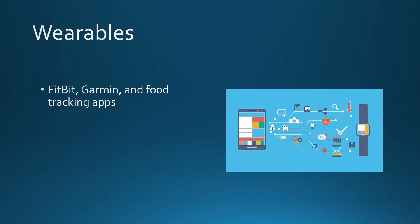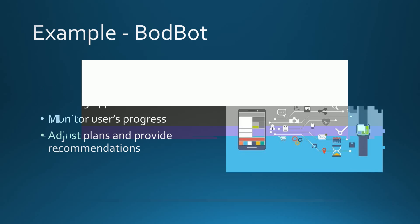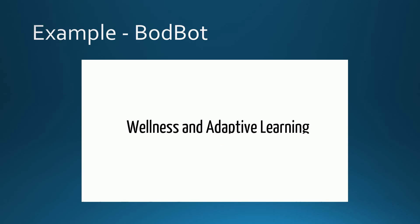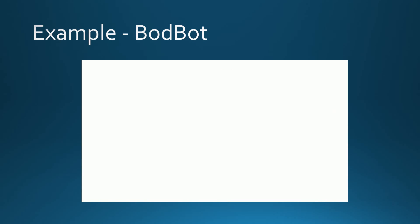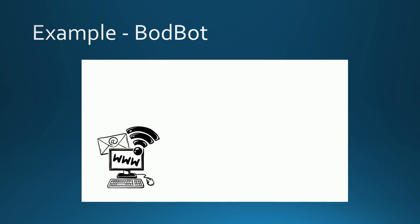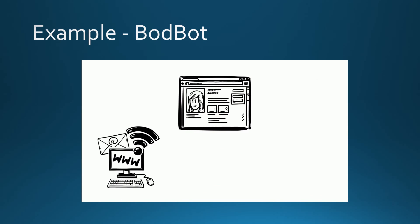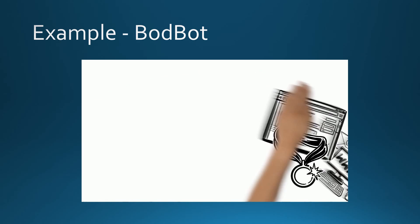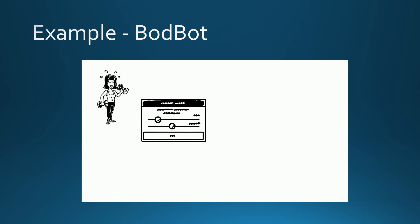They utilize wearables like Fitbit, Garmin, and food tracker applications to monitor the user's progress and adjust recommendations based on the user's performance. BODBOT is an adaptive learning program that acts as a personal trainer, nutritionist, and coach. Users sign up for free, and BODBOT develops a personalized plan based on the user's goal — whether that be lose fat, gain muscle, or improve health. Their fitness tests allow the application to adjust its recommendations based on the user's strengths and weaknesses, providing immediate feedback and assistance to ensure a safe workout.